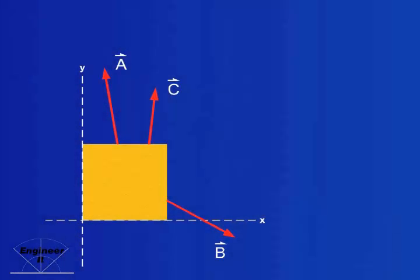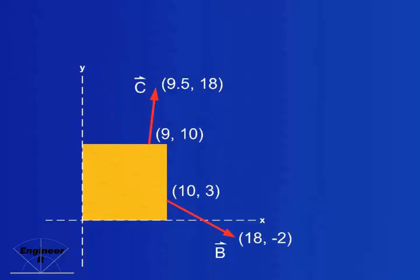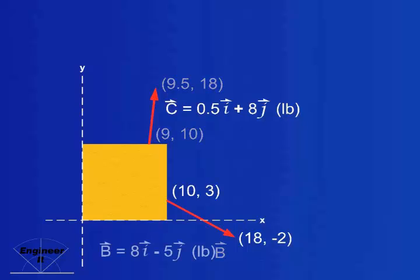Let's look at the resultant of vectors A, B, and C algebraically. These forces are in pounds. Given that the two endpoints of B and C are as shown, we can find that in vector notation C equals 0.5i plus 8j in pounds, and B equals 8i minus 5j in pounds.